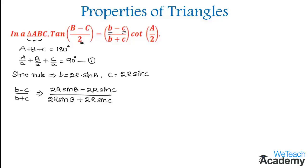By taking 2R as the common factor in numerator and denominator, it gets cancelled, and we are left with sine B minus sine C divided by sine B plus sine C.